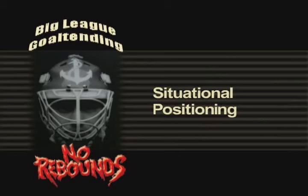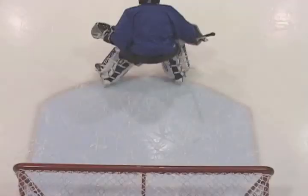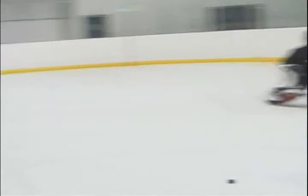Situational positioning, by definition, means that the depth of your challenge off the goal line must vary based on the situation at hand. Small adjustments in depth result in dramatic advantages when used with proper timing to handle the proper situation. Let's discuss some game situations as examples.